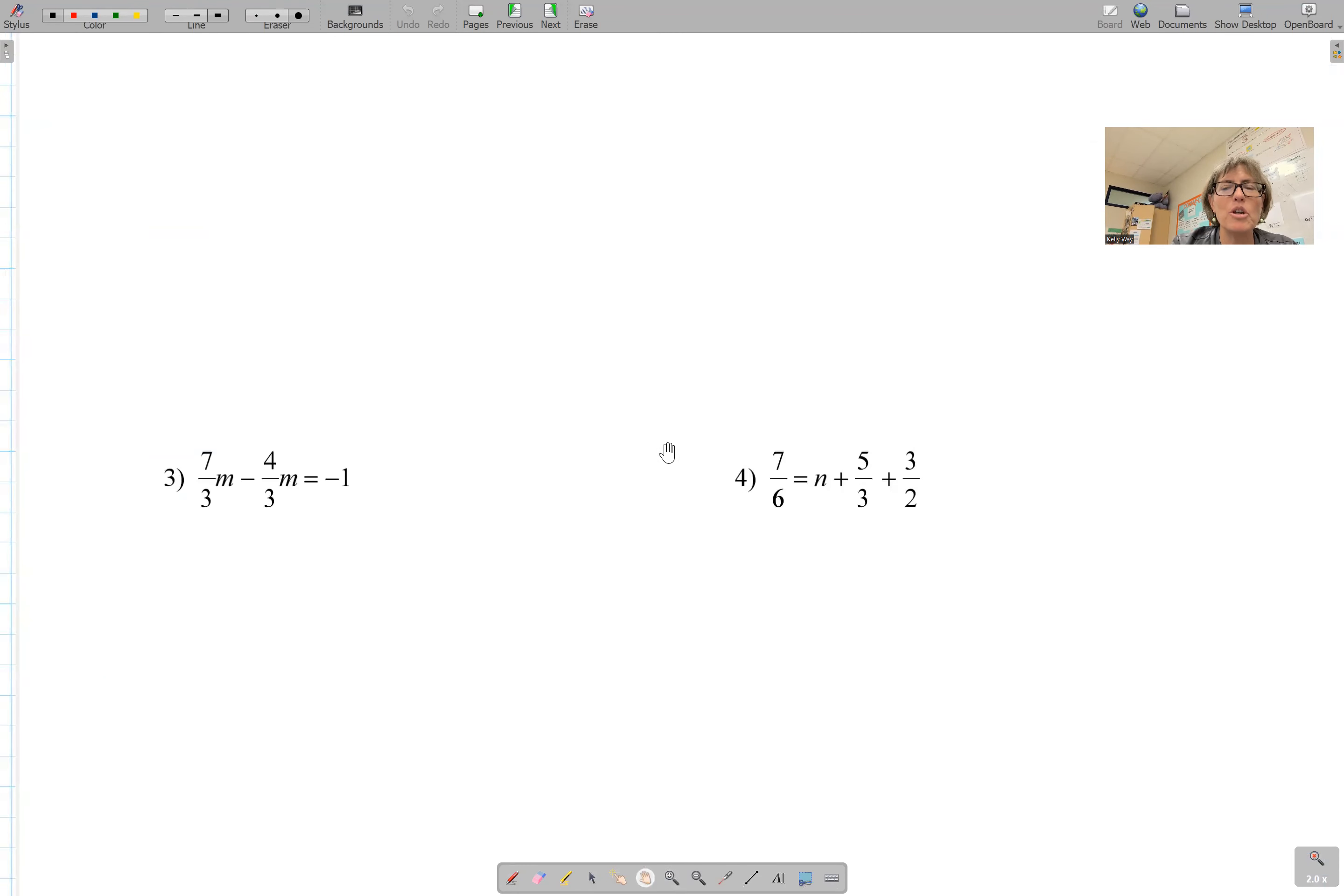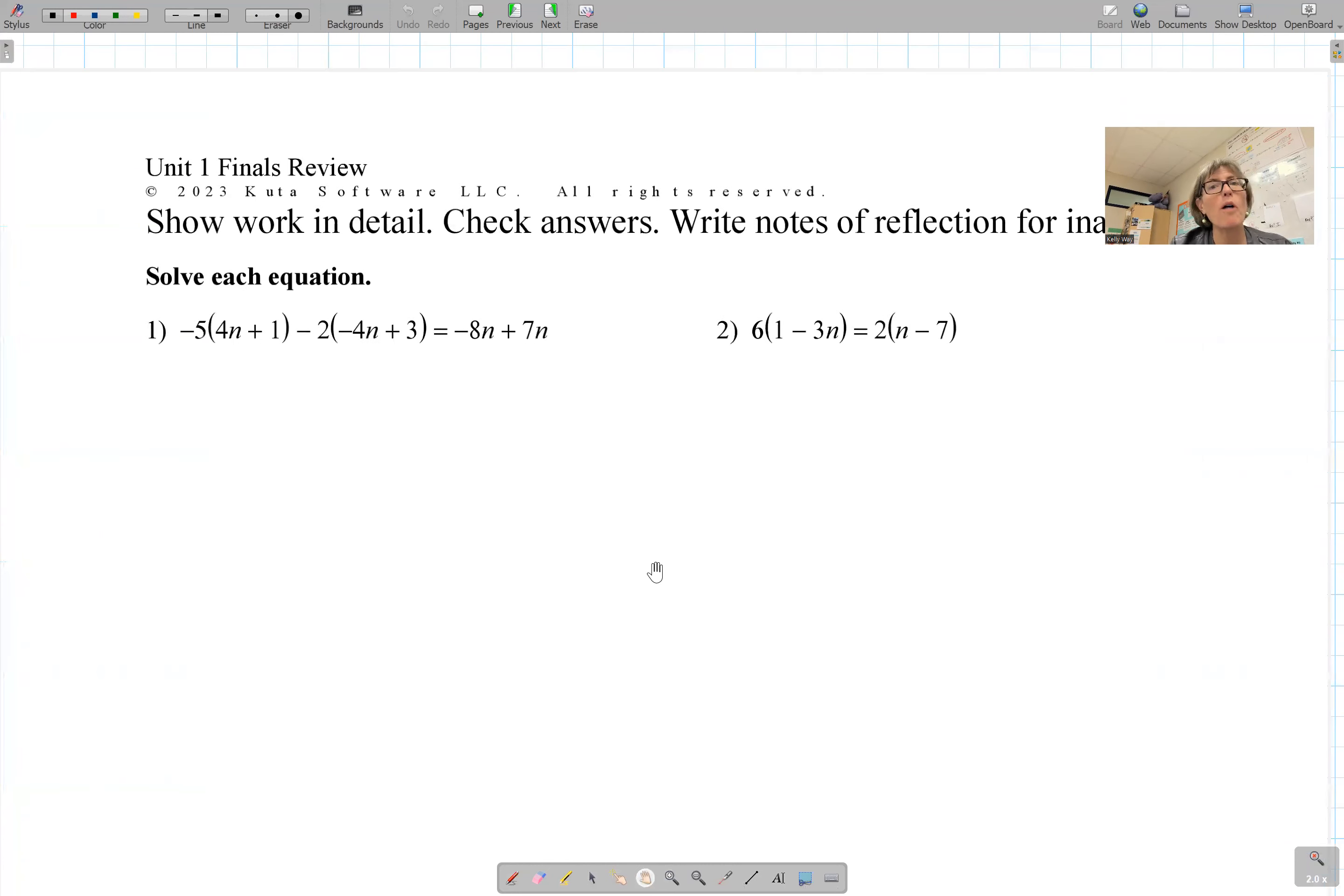Taking a look here, I'm going to do one problem from each section, partially, not completely. So for problems like this, you always want to start by circling what you're distributing. Circle what you distribute. Make sure you get that negative sign there.